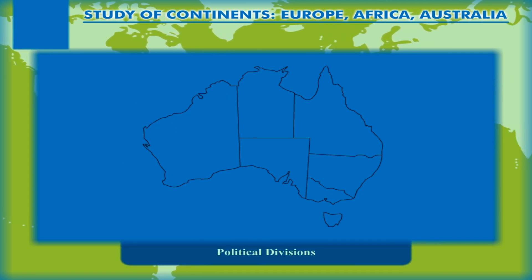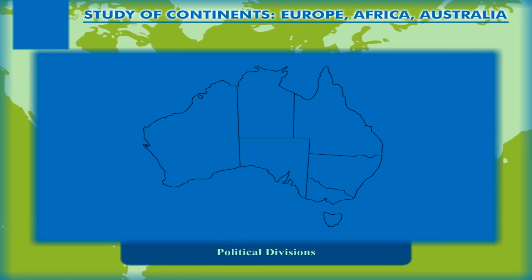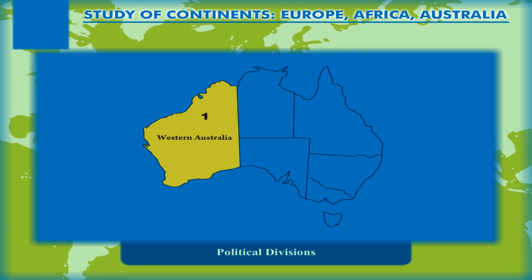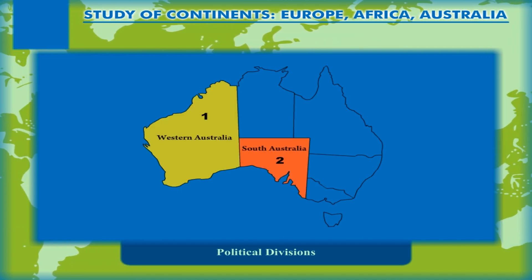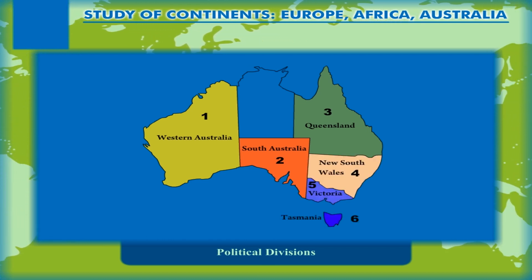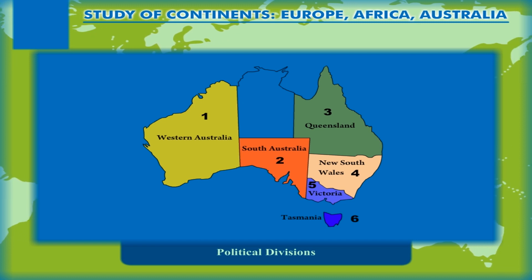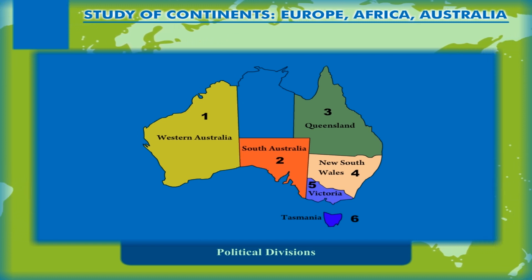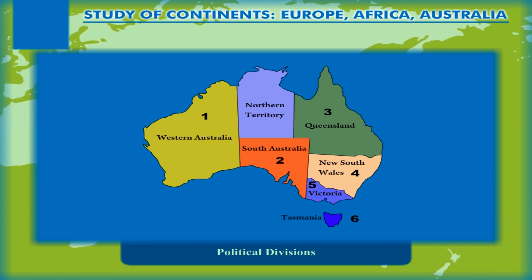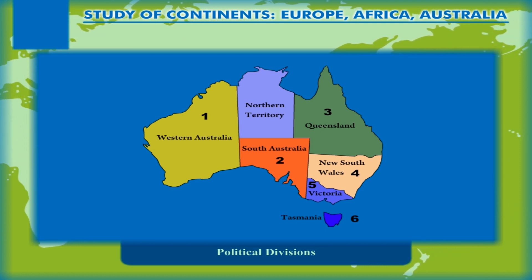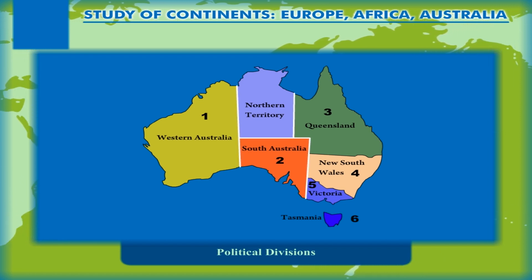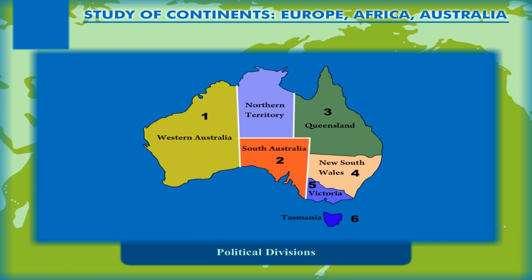The continent of Australia is divided into six states, namely Western Australia, South Australia, Queensland, New South Wales, Victoria and Tasmania. The other political divisions are the centrally administered territories of Northern Territory and the Australian Capital Territory. The states of Australia are bordered by straight lines as they do not follow any physical feature as the natural boundary line. Only New South Wales and Victoria are separated by a natural boundary line following a river.